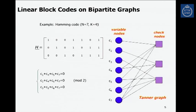How do we read this bipartite graph? In the first equation we have c1, c4, c5, and c7 — exactly the first equation. So we connect the check node with the variable nodes that appear in the equation described by the check node. Similarly, the second check node has c2 + c4 + c6 + c7, which is the second row of h, and so on. This is another way to represent the constraint given by the parity check matrix h. This is sometimes called the Tanner graph — an equivalent representation of the parity check matrix h.